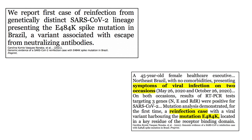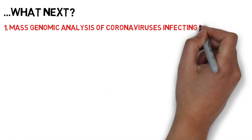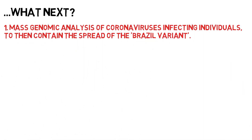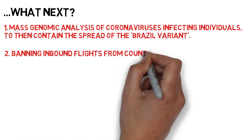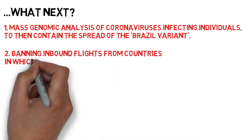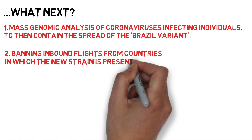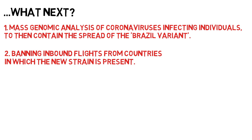Some concerns have arisen that this variant could possibly bypass the immunity that current vaccines provide. Scientists will need to test the genetic material of coronaviruses infecting patients to determine if they are infected with the variant. If so, attempts need to be made to contain it. The banning of inbound flights will prove to be pivotal in minimising the chances of this variant arriving in the UK and other nations.